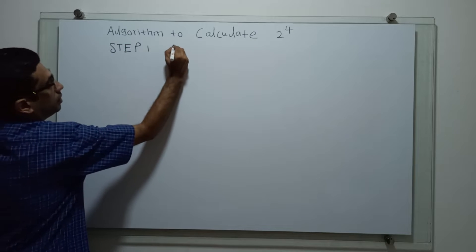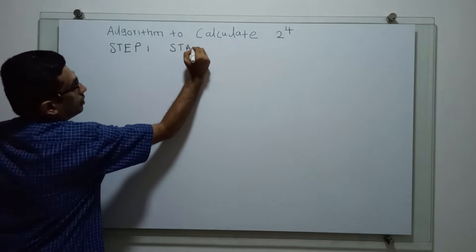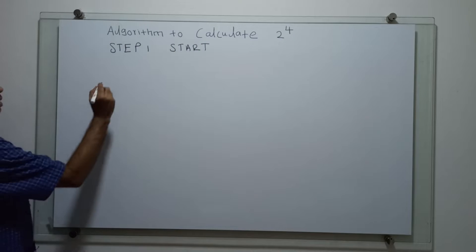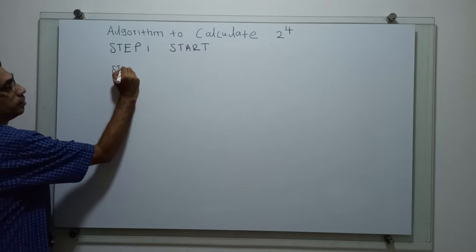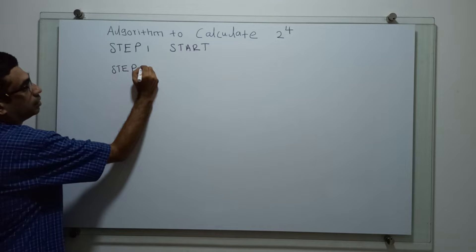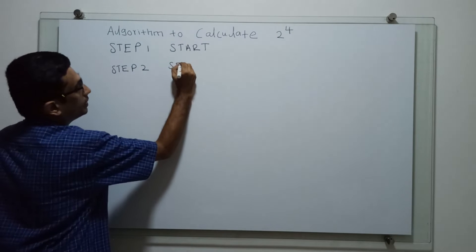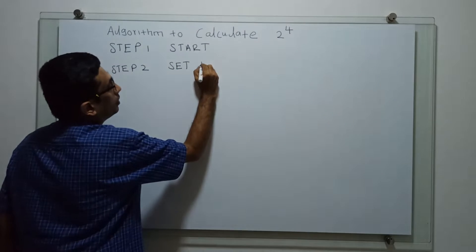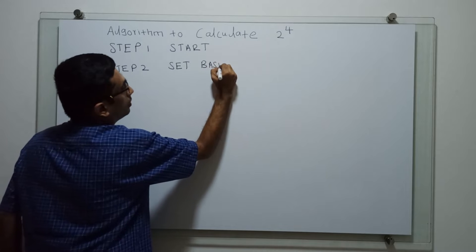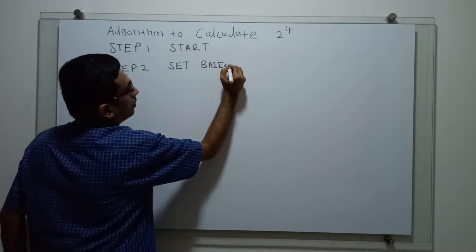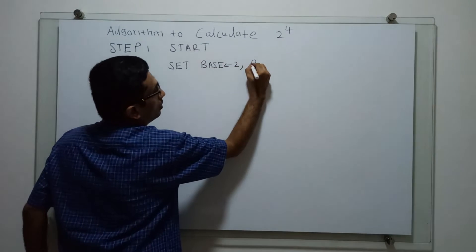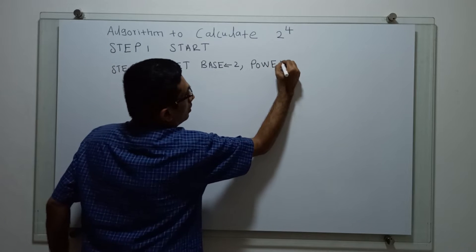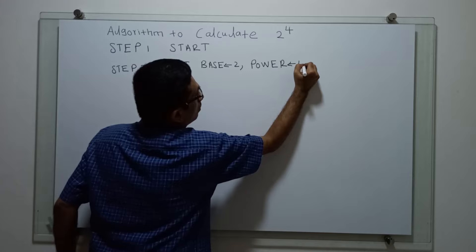Step 1 is the logical start of the algorithm. Step 2, I am assigning - set is a keyword to assign, evaluate a variable - base equal to 2, power equal to 4.